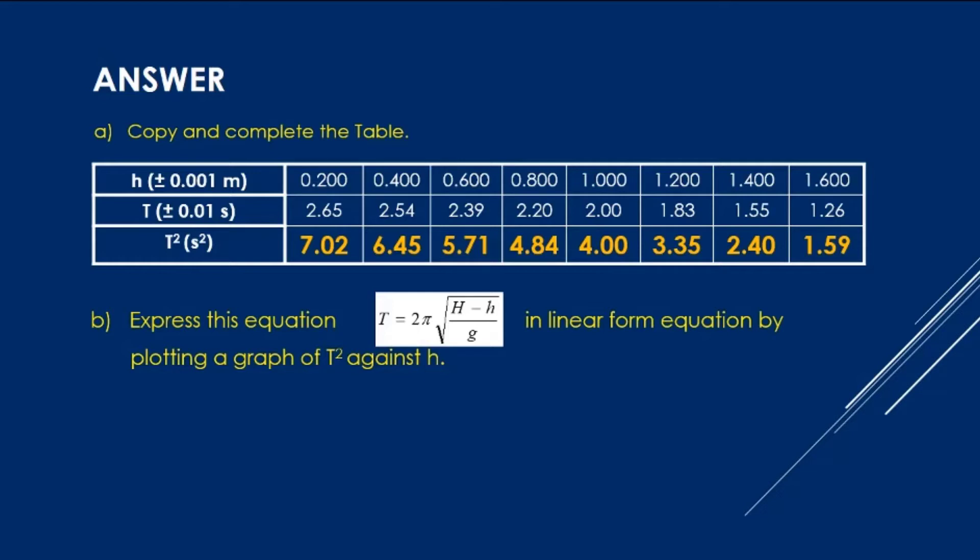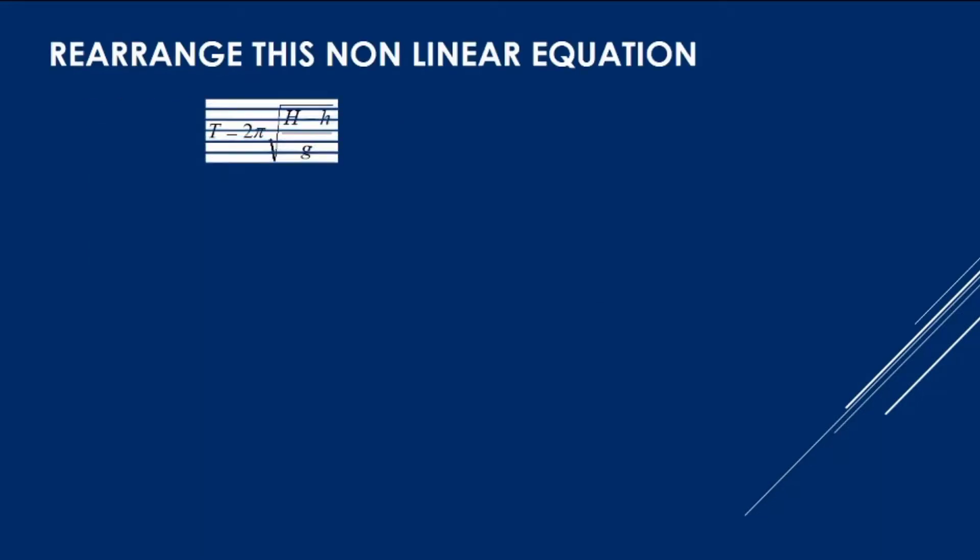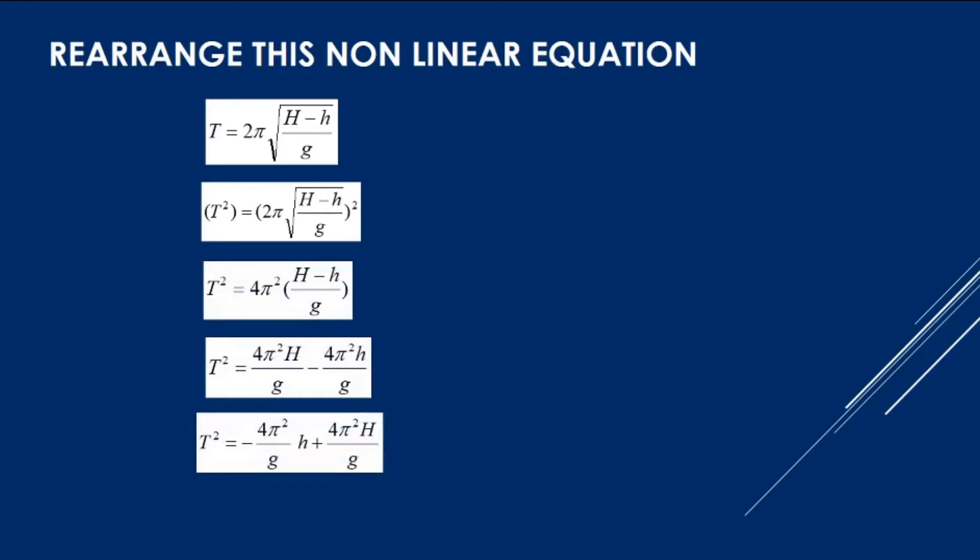Now we are going to express this equation in linear form by plotting a graph of T squared against h. But before that, we have to rearrange this equation to get the linear form equation. From T equals 2π square root H minus h over g, you have to square both sides, and then we get T squared equals 4π² H minus h divided by g. We can simplify our equation and compare with the straight line equation. The y-axis will be T squared, the gradient is negative 4π² over g, the x-axis is h, and the y-intercept is 4π² H over g.